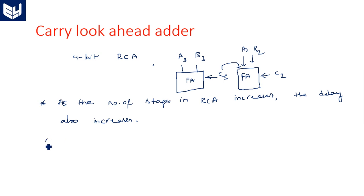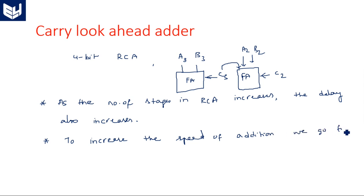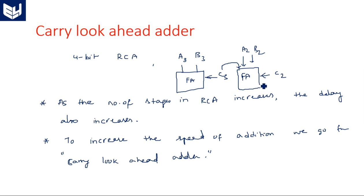So this is the main drawback of the ripple carry adder. In order to avoid this and to increase the speed of addition, we go for the carry look-ahead adder. The meaning of carry look-ahead adder is that we are generating the carry ahead — before the occurrence of C3, C2, etc. When A0 B0, A1 B1, A2 B2, A3 B3 are all ready, all the carries are generated at the same time without any delay, and then they are applied to the full adders so they can produce outputs in parallel.